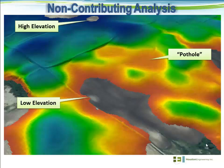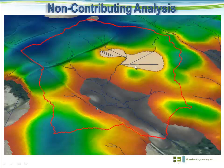The next few slides will help illustrate what we're actually doing during the non-contributing analysis to determine whether or not certain portions of the landscape are contributing versus non-contributing. The blue correlates to higher elevations, the brown correlates to lower elevations, and you can see there's a pothole within the landscape at this particular location. What we're trying to do is determine whether or not that pothole is contributing versus non-contributing.